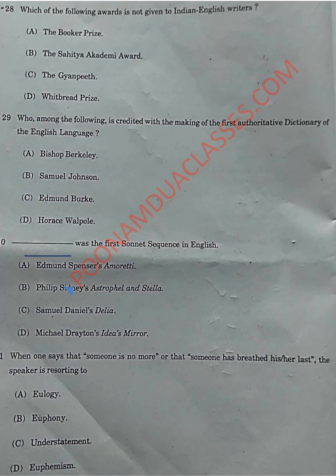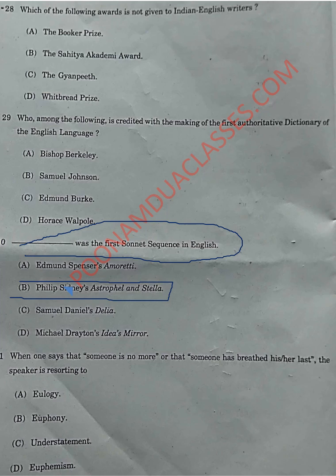The next question: which was the first sonnet sequence in English? The correct answer is Option B — Philip Sidney's Astrophel and Stella. Sidney's Astrophel and Stella and Spenser's Amoretti were written quite close to each other. Astrophel and Stella was published in 1591, making it the first sonnet sequence in English.